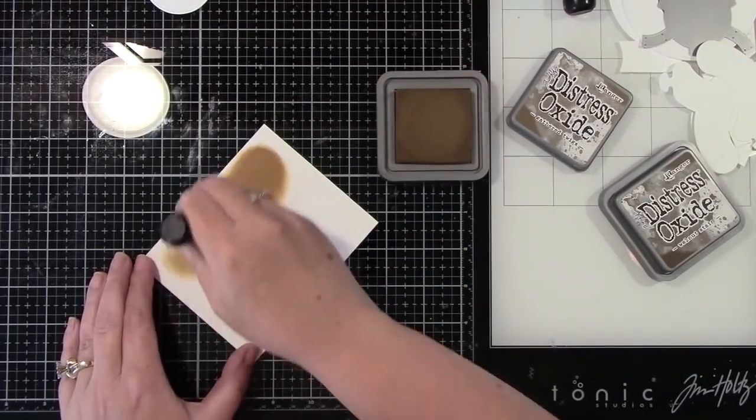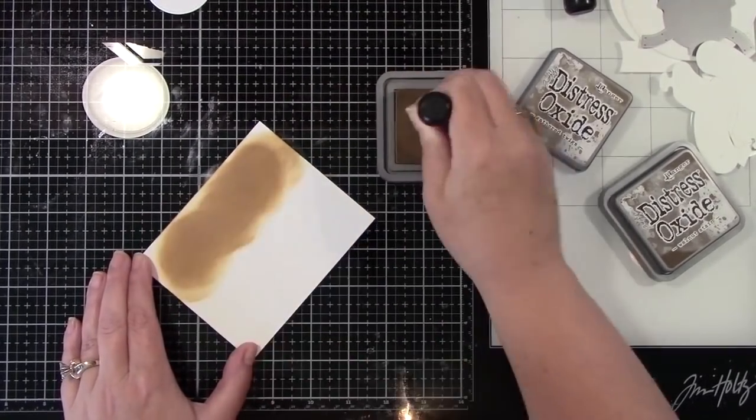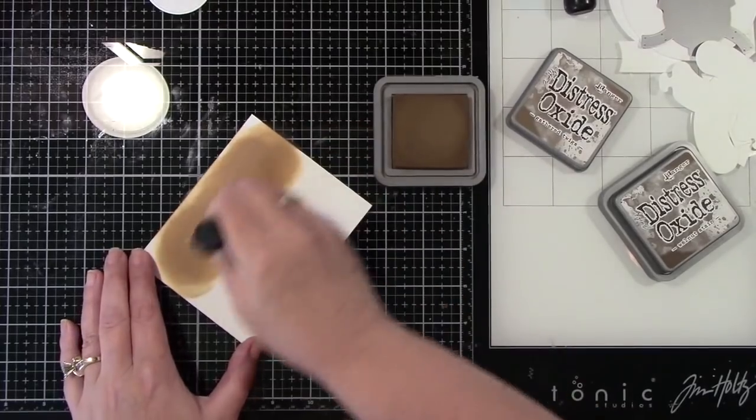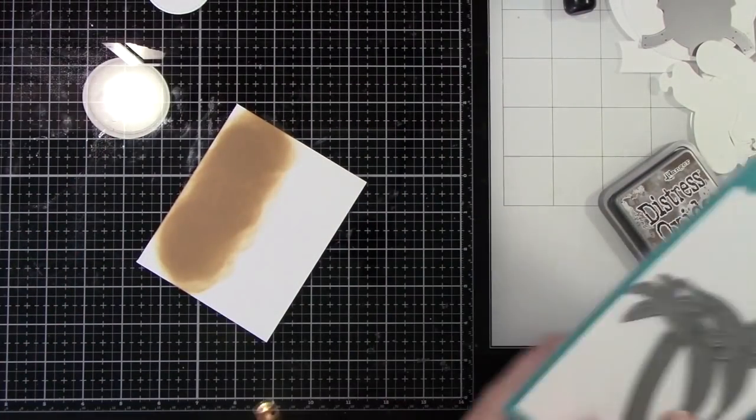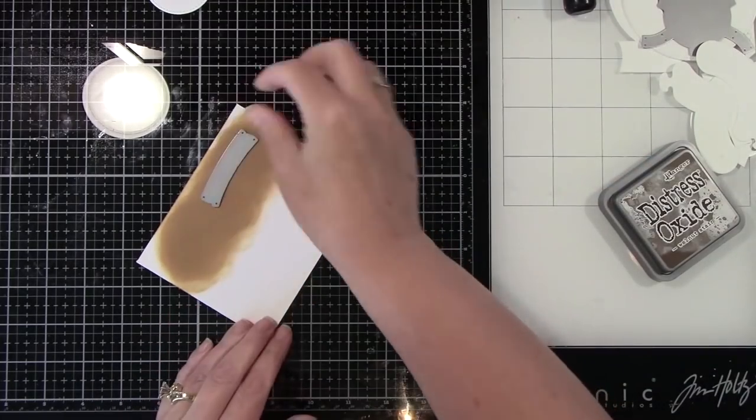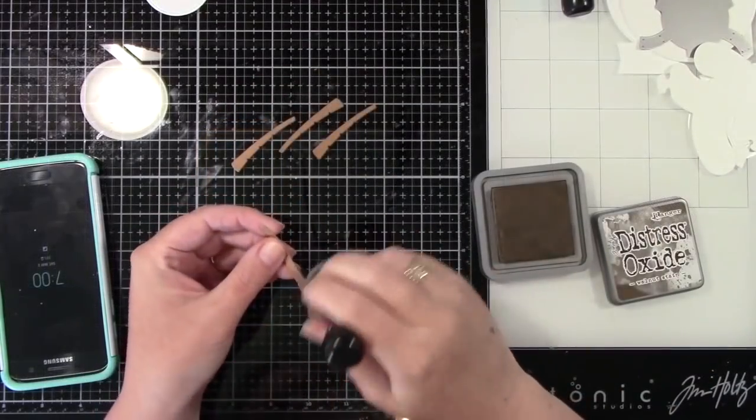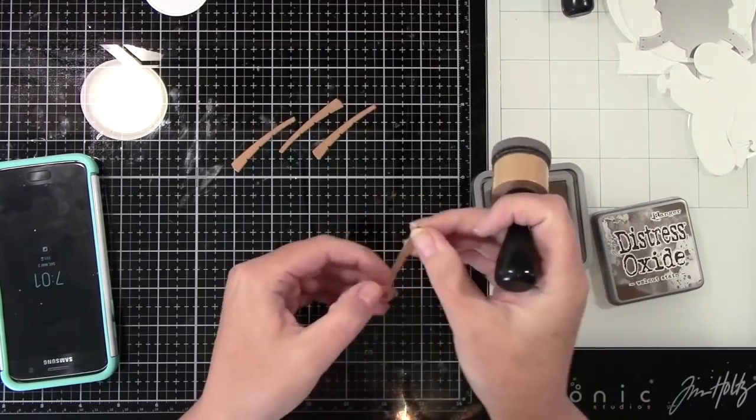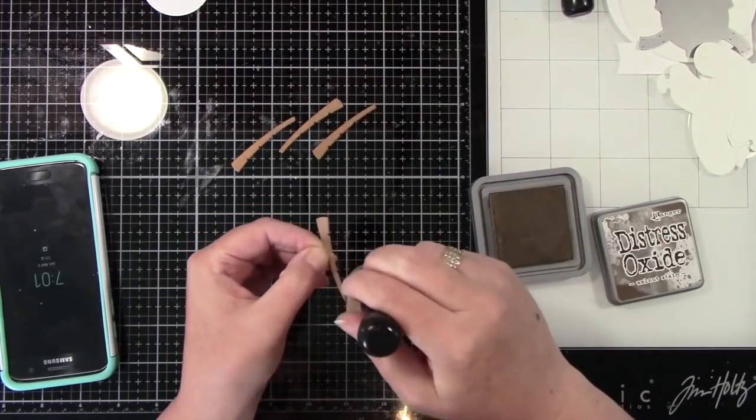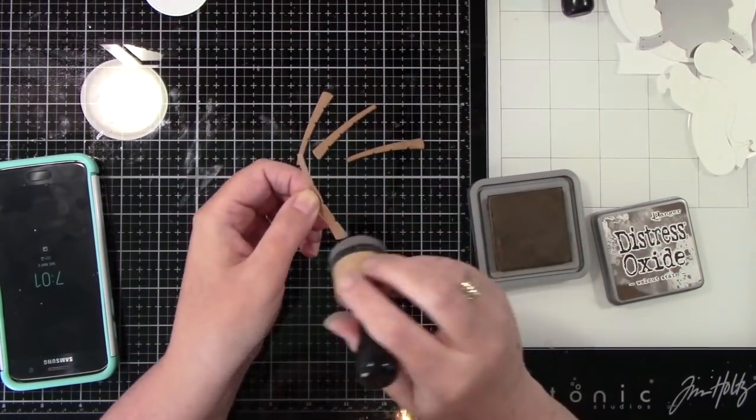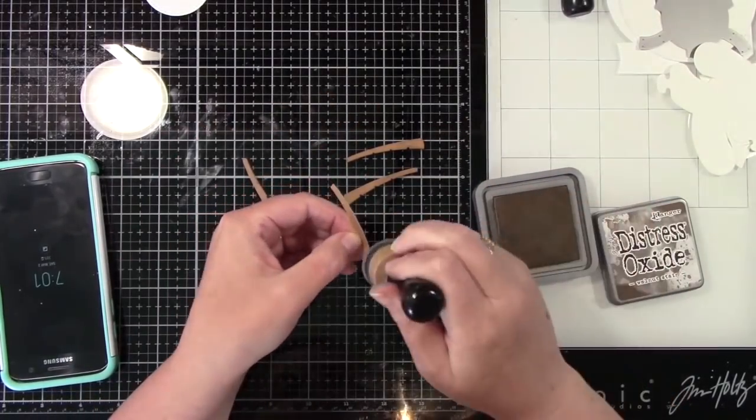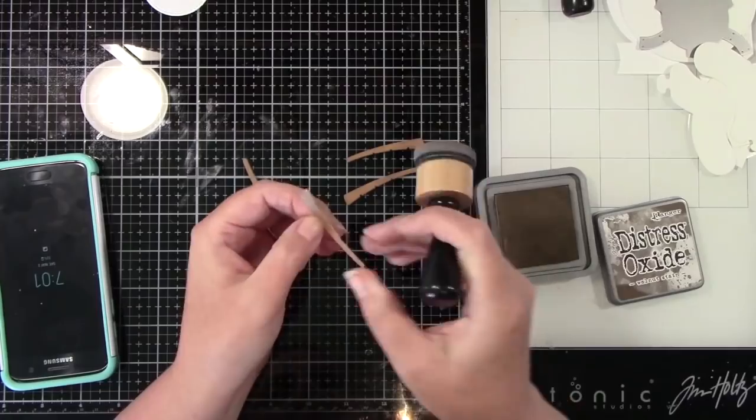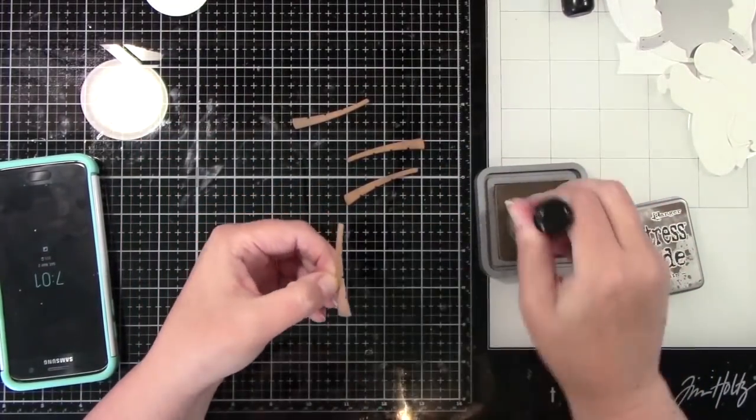Okay, on another piece of cardstock, I am using gathered twigs and I'm just inking it up and I'm going to be cutting out the palm tree trunks. And this is out of the hammock and trees die. And then once those are die cut, I'm going to take a little bit of walnut stain and just ink around the edges just to give a little bit of dimension and character to these trees.